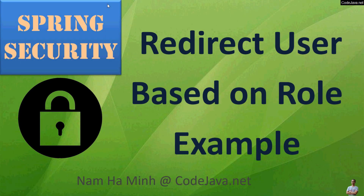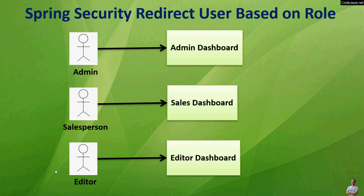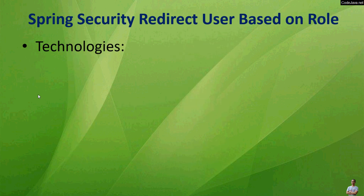Hello and welcome to the video: Spring Security direct user based on role example. I am Nam Haming from CodeJava.net. In this video you will learn how to write code in a Spring Boot web application for directing users based on their roles after successful authentication. In other words, different users with different roles will see different pages after login. For example, if a user has the role Admin, they will see the admin dashboard after successful login; if the role is Salesperson, they see the sales dashboard; if Editor, they are redirected to the editor dashboard.